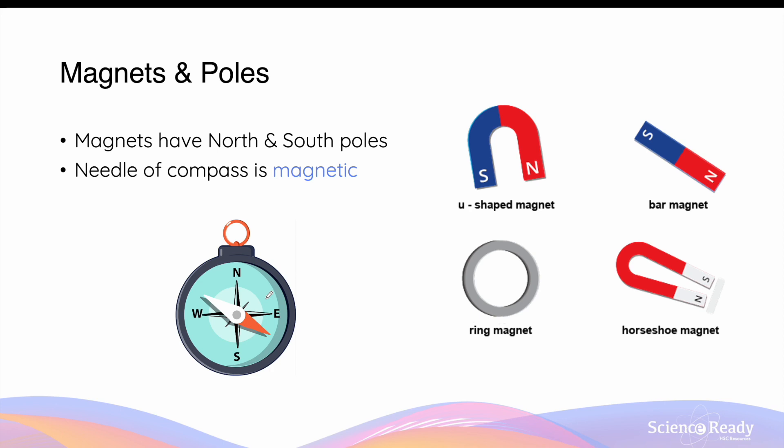Most of you are aware that magnets have poles — north and south poles. Regardless of the shape of the magnet, whether it's a U-shaped magnet, bar magnet, or horseshoe magnet, you should be able to identify the two opposite polarities of these magnets.